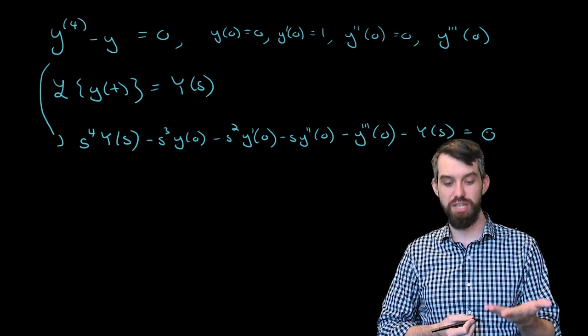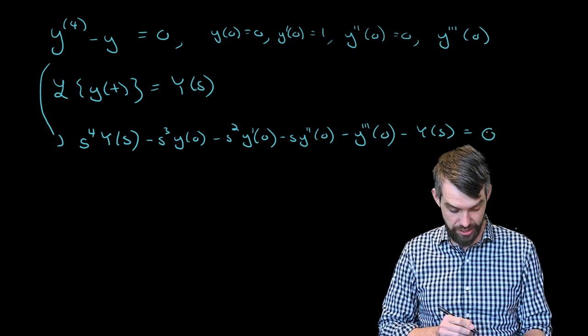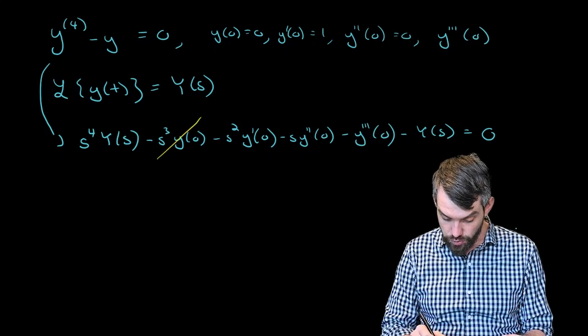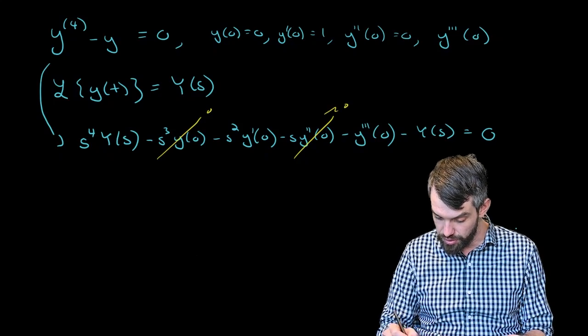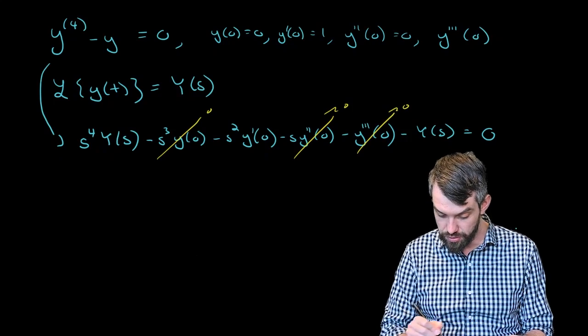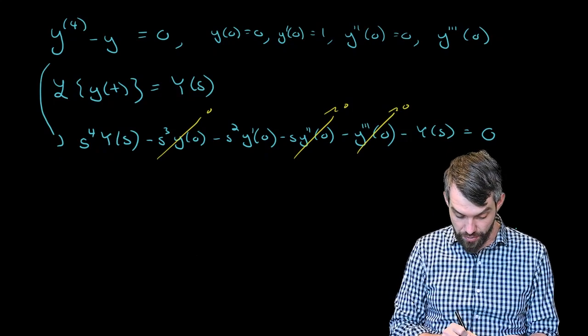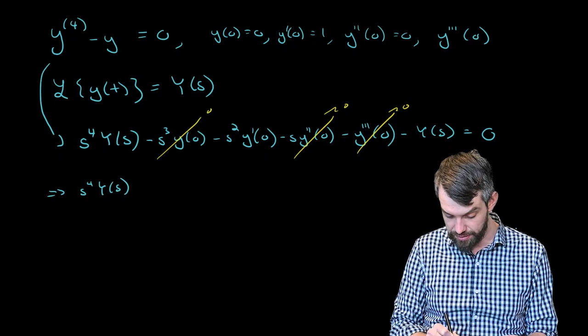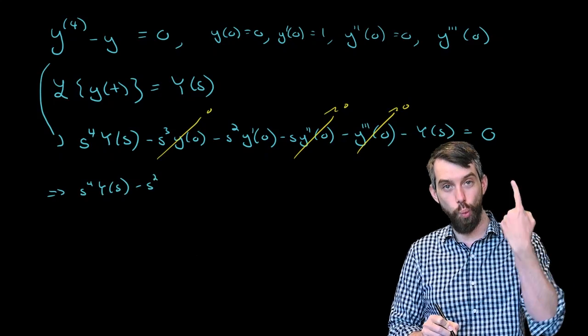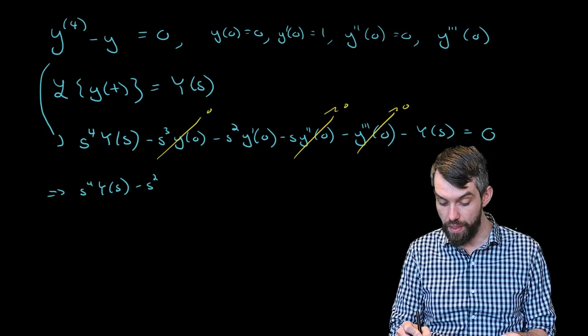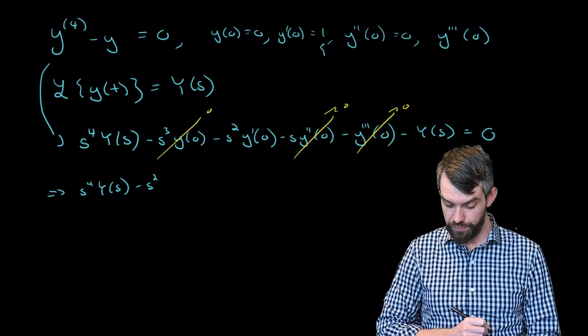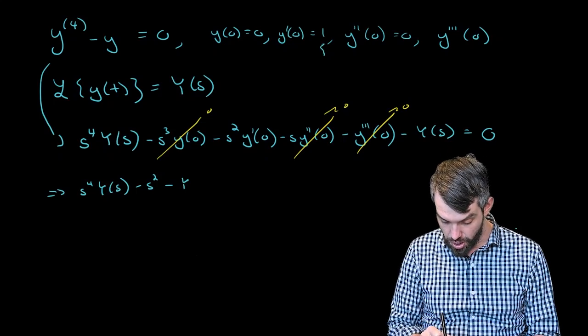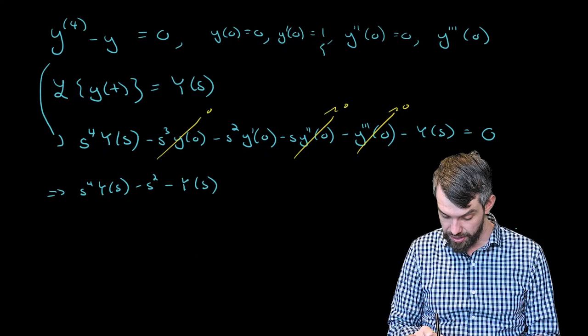Now, thankfully, my initial conditions are relatively nice, and the only one that's non-zero is y prime. So this one's going to go to zero, that one's going to go to zero. And as a result, what I will do if I clean this up a little bit is I get s to the fourth Y of s minus s squared times one, since y prime of zero happened to be one. Then subtract off Y of s, and this is equal to zero.